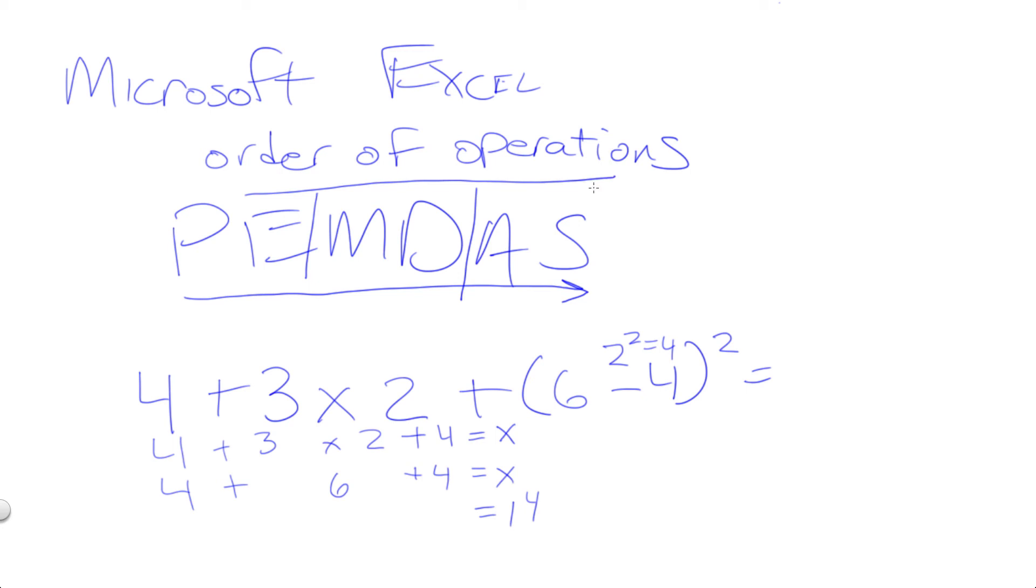So Excel is the most logical program on the planet, theoretically. Not that any other program can't be logical, but as we write our formulas, we have to write the formulas including the thought process of the order of operations, because if we don't, Excel will probably not get what we think it should. So just keep that in mind as you're using Excel and you start to write formulas. You definitely want to write according to the order of operations.